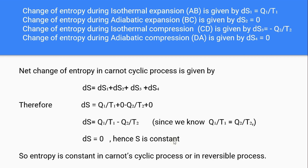Therefore entropy is constant during the Carnot cyclic process. Since the Carnot cycle is a reversible process, it is proved that in a reversible process there is no change in entropy — entropy remains constant. In the next video we are going to discuss about change of entropy in an irreversible process.